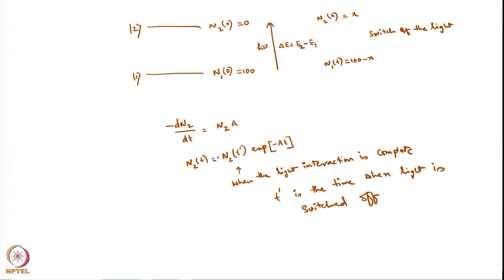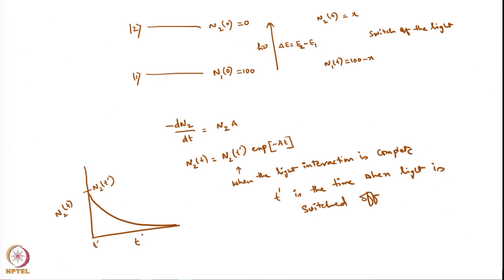The solution is an exponential: you can see that n2(t) starts at some value n2(t-prime) and then exponentially decays, asymptotically going to zero. The rate constant for this first-order decay is A.